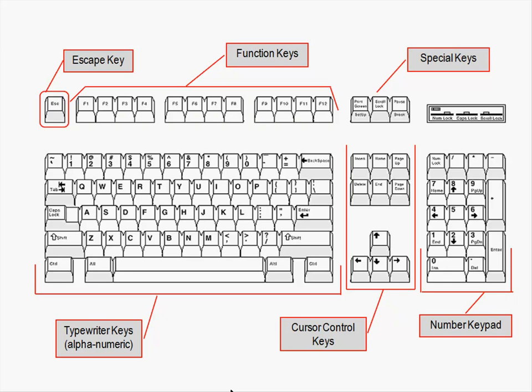Back to the main QWERTY keyboard: there are numbers along the top, and above those numbers are characters like an at sign, number sign, and dollar sign. Just like on old-fashioned typewriters, pressing the Shift key — found on the lower left and lower right — lets you make capital letters or type the upper character on a key. For instance, to type a dollar sign, press Shift and then the number 4.